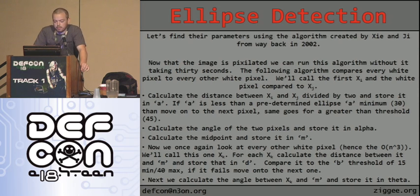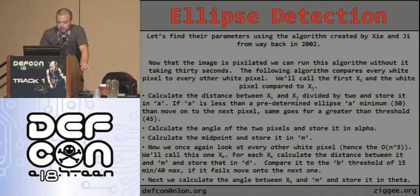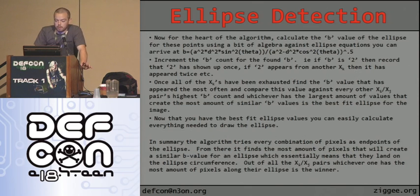Moving onto the next pixel, if the threshold is greater than 45, you calculate the angle of the two pixels and store it in alpha, calculate the midpoint and store it in m. Now we'll look at every other white pixel — hence the n-cubed complexity — and call this one xk. For each xk, calculate the distance between it and m, store that in d, and compare it to a b threshold of minimum 15, maximum 40. If it fails, move on. Then calculate the angle between xk and m, storing it in theta.